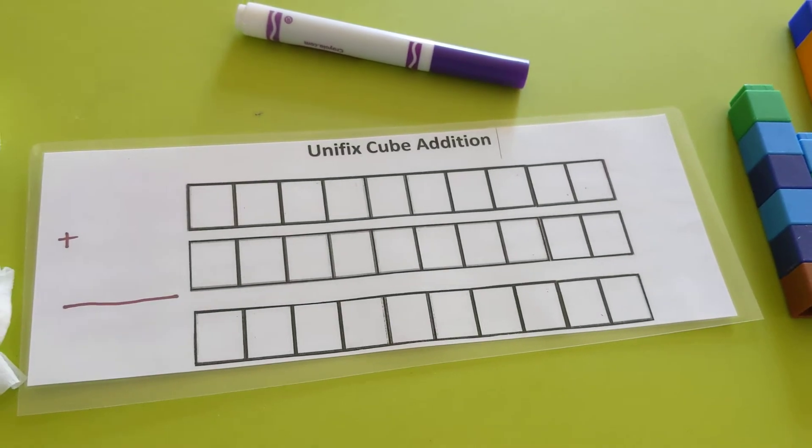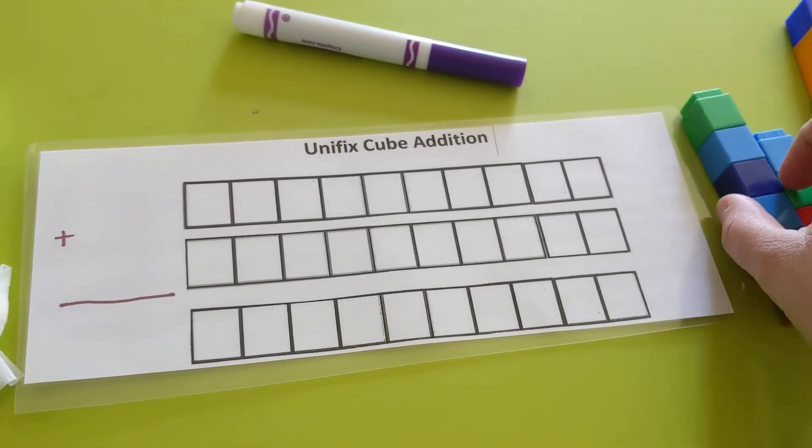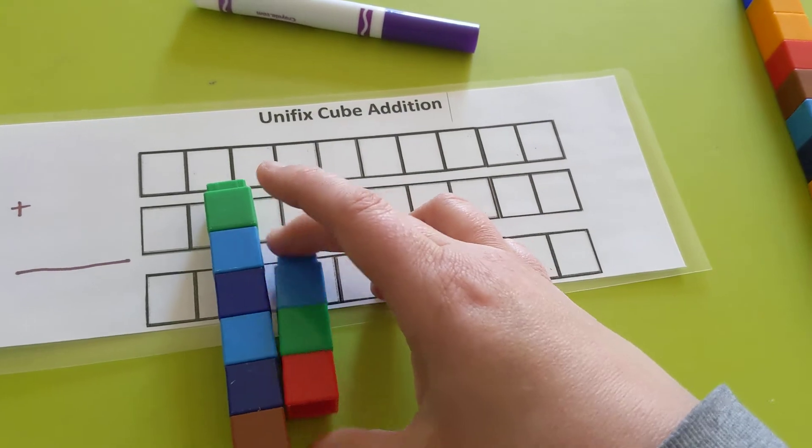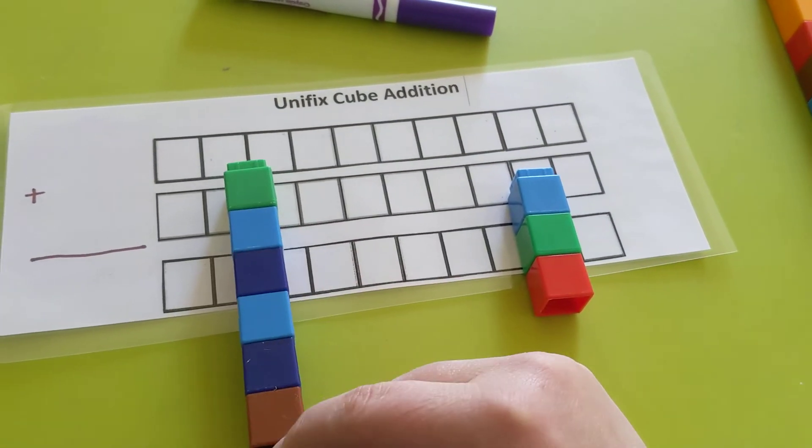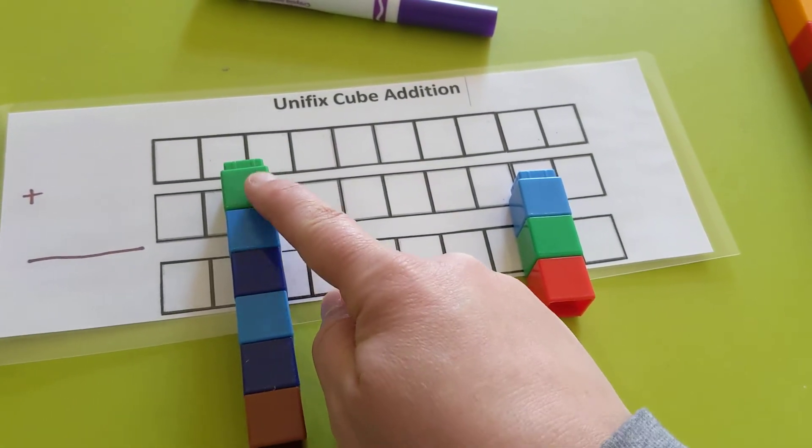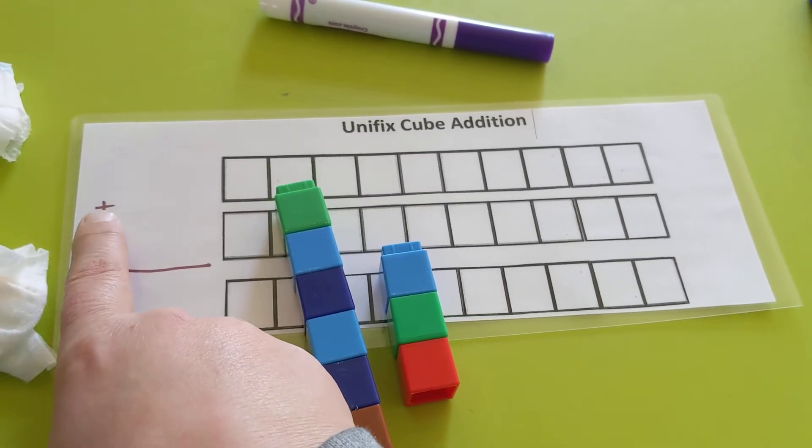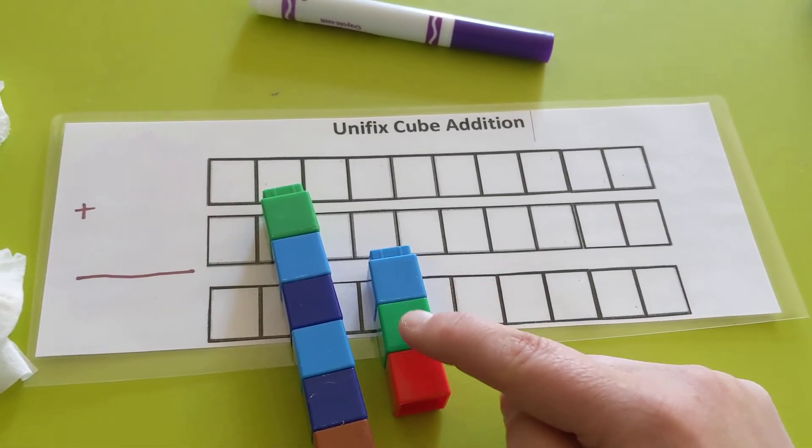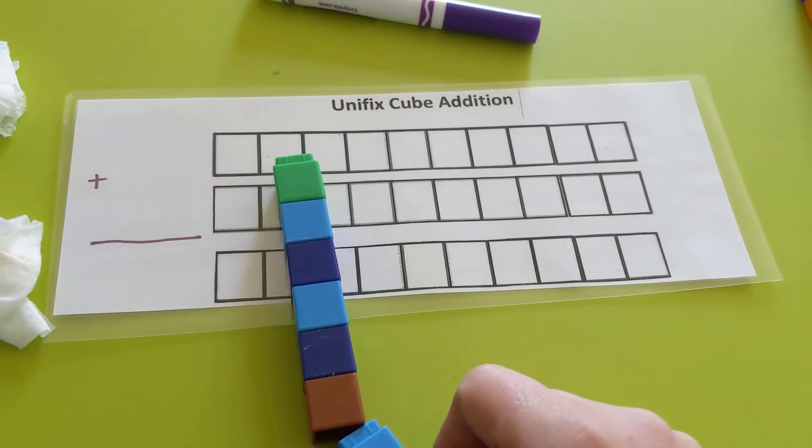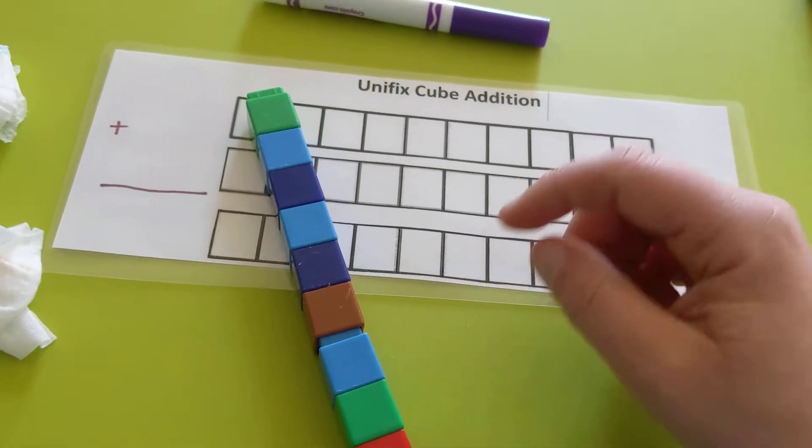So addition. Addition is when we put things together. Like this is 1, 2, 3, 4, 5, 6. Together, that's our addition sign. That means we're putting them together with 1, 2, 3. When you put them together, you get a new number that's both of them together.